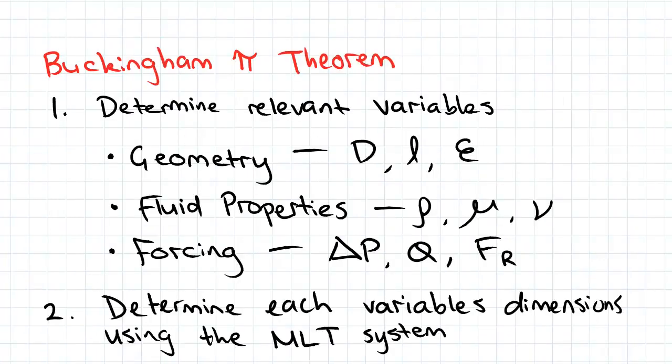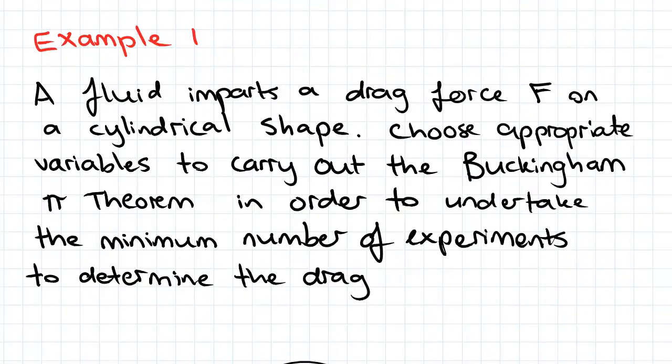So going back to our Buckingham Pi procedure, the first step is to determine the relevant variables. Now up until now we've always been given the relevant variables and on the most part that will be the case, but in this question we've been specifically asked to determine the relevant variables.